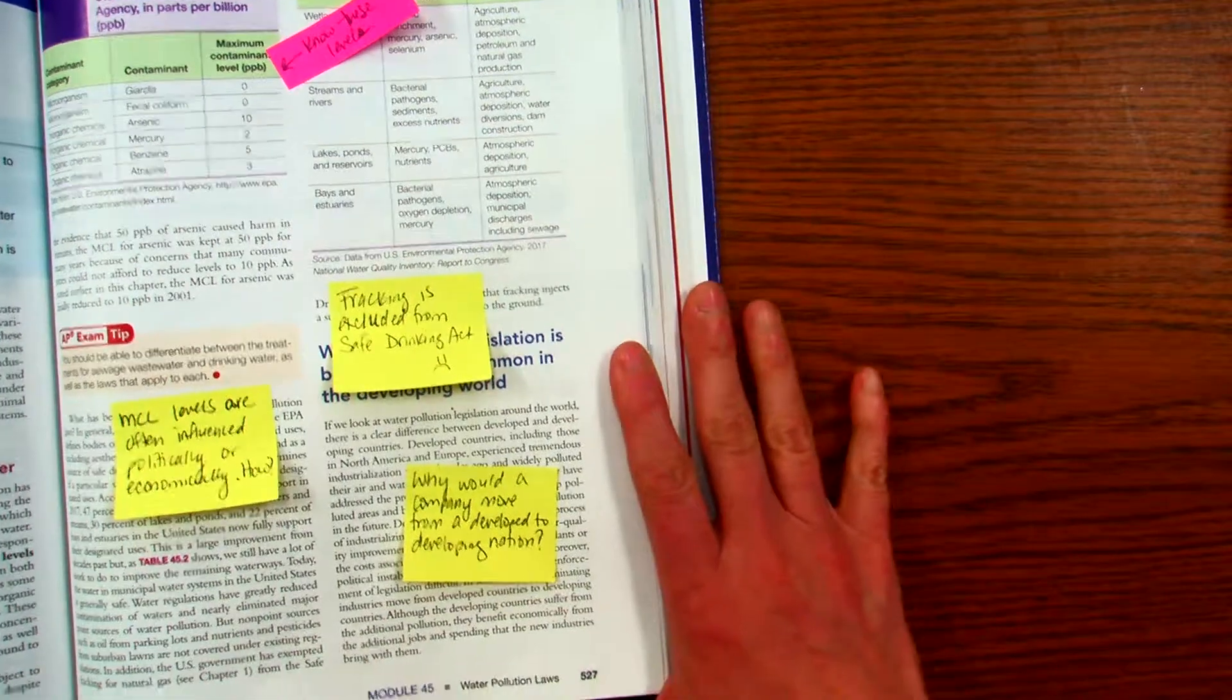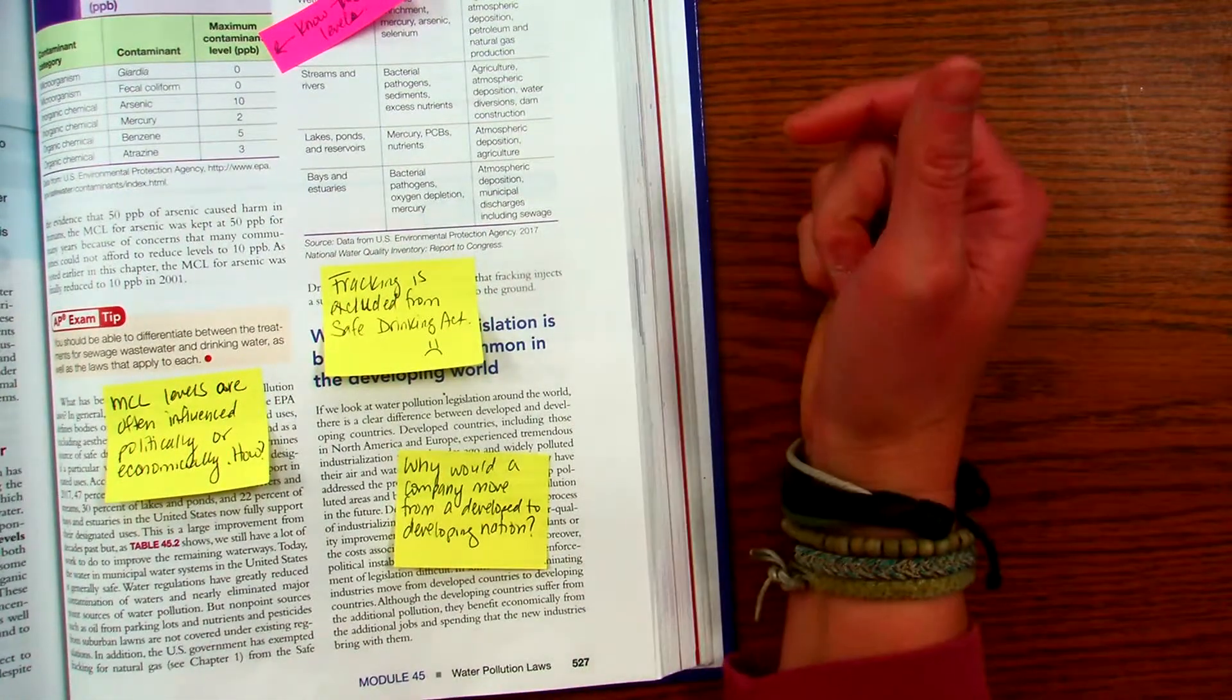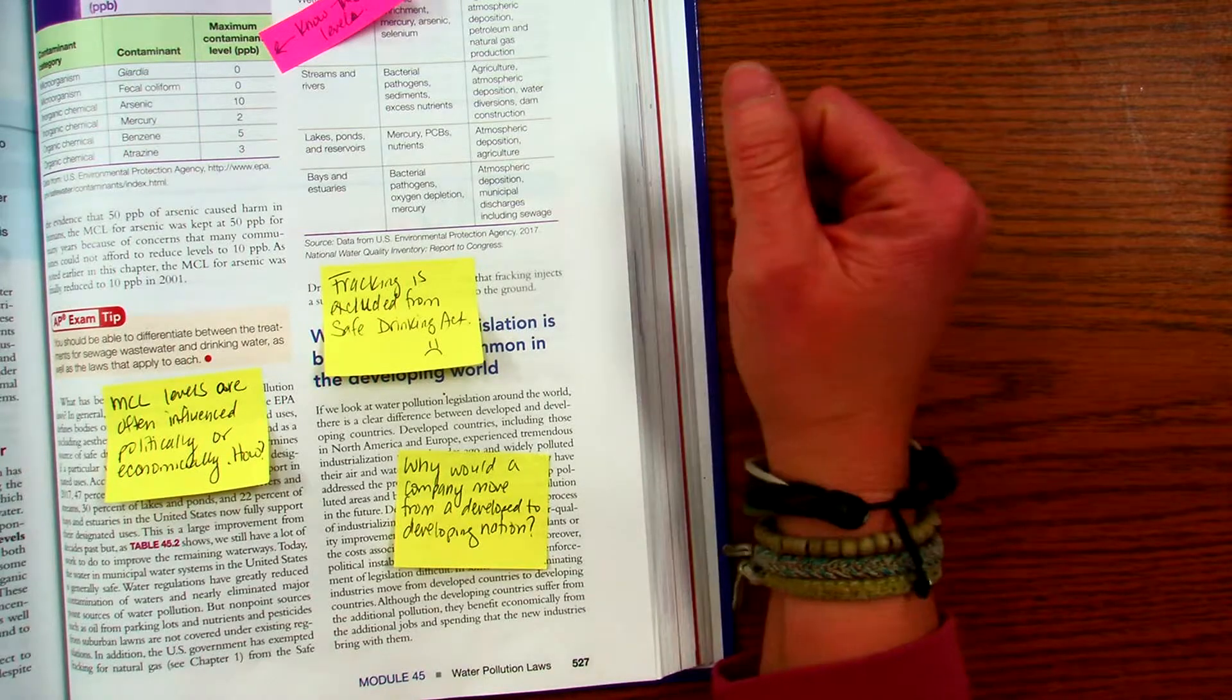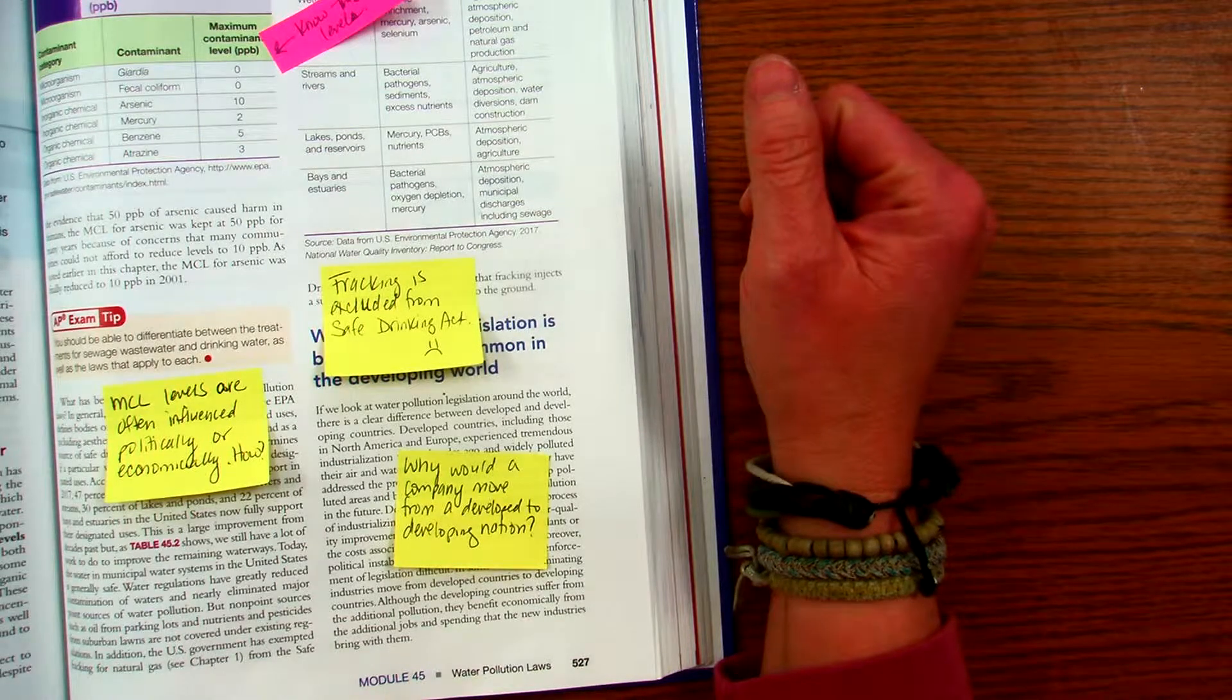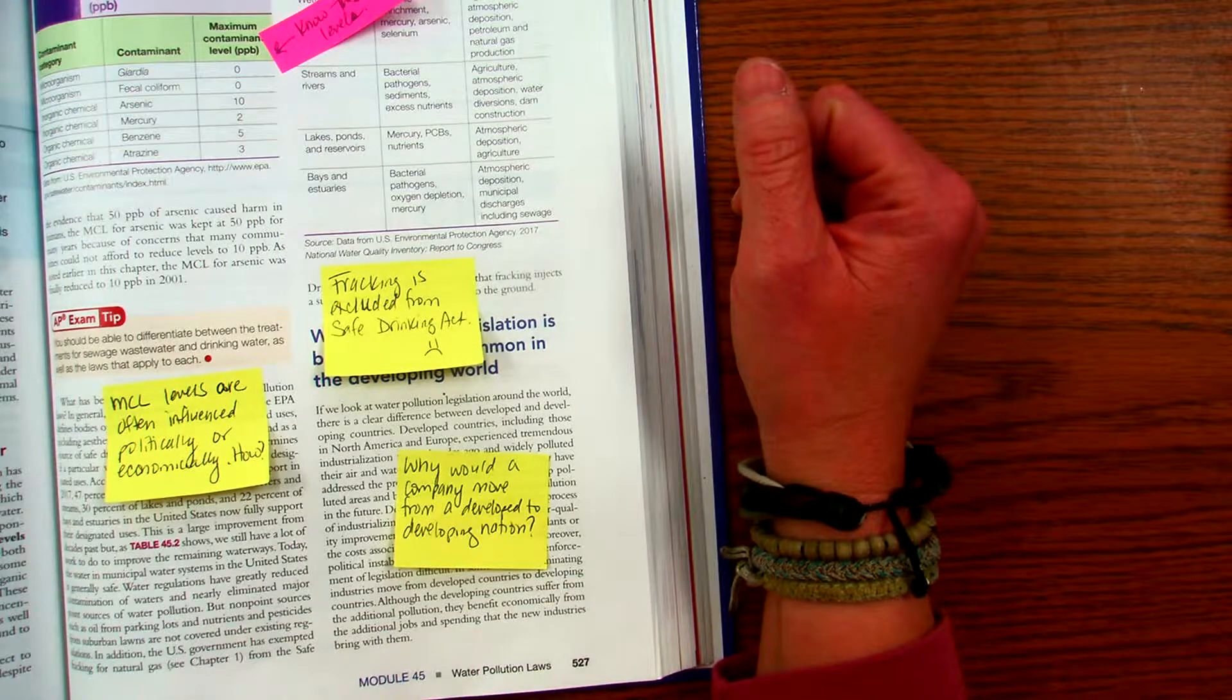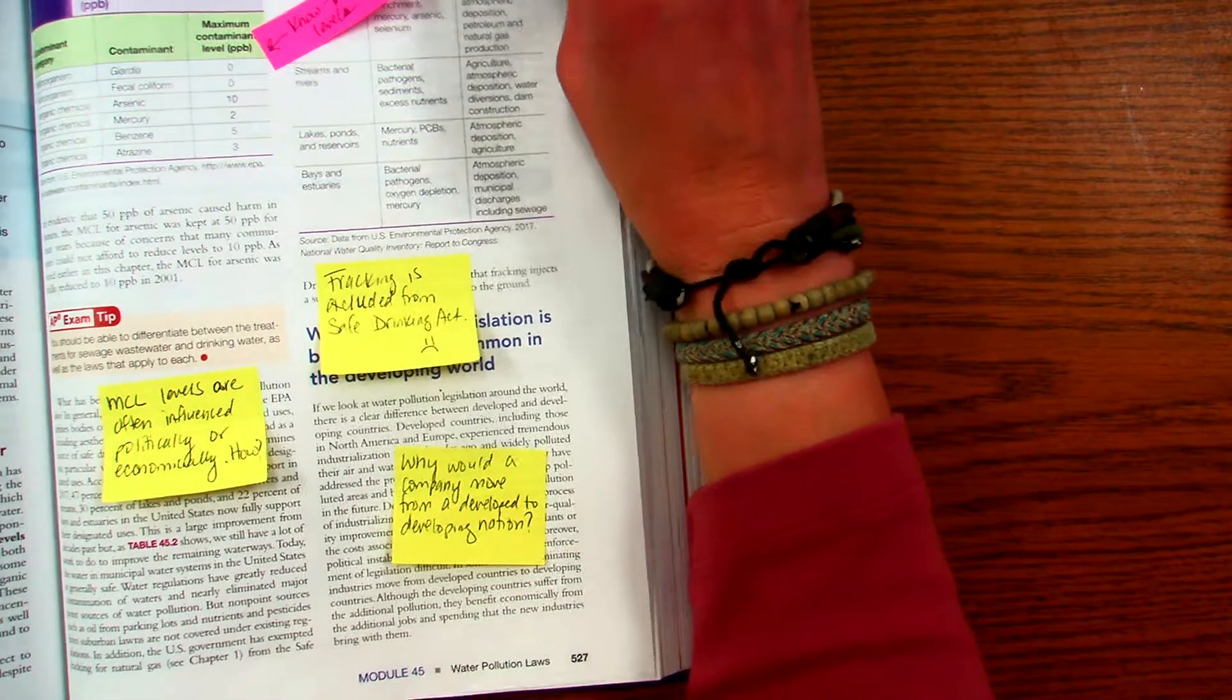And then moving down to the bottom, why would a company move from a developed to a developing nation? So why would they go from a nation that's stable economically to a developing nation? Why would they do that? So there's some environmental reasons.